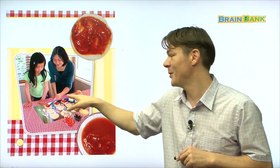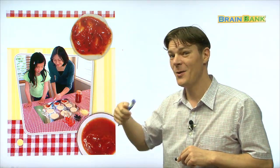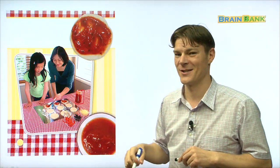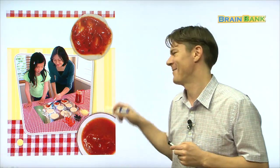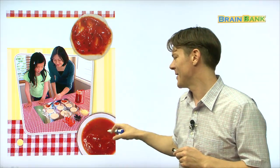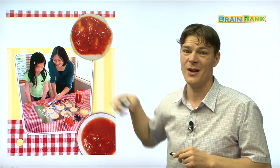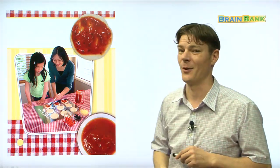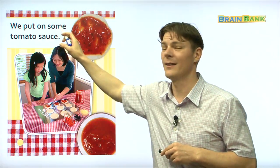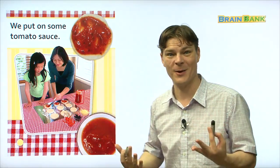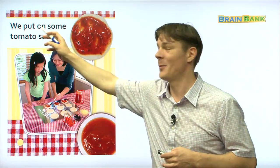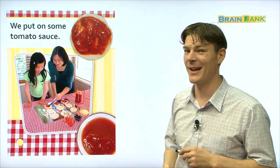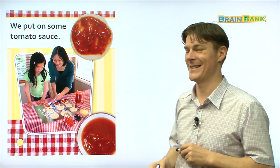Mommy is using a spoon to get the, what is this? Tomato sauce. Do you remember? Right. That's good. Tomato sauce. So, she's putting the tomato sauce onto the dough. Right? She's spread it out all over the dough. We put on some tomato sauce. Everybody repeat with me. We put on some tomato sauce. Great. It's starting to look like a pizza, isn't it? Let's see what's next.